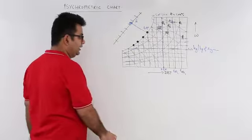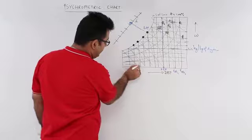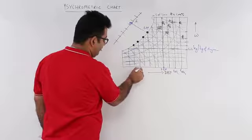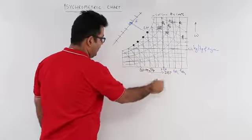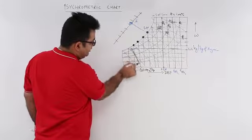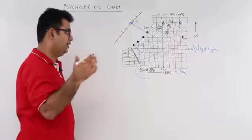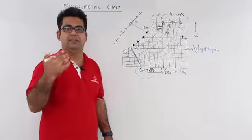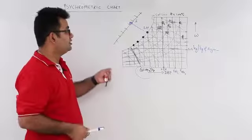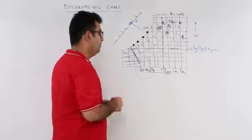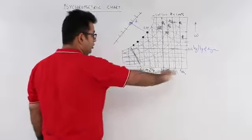The red colored lines on the chart show specific volume. For example, a line might represent 0.85 cubic meters per kg. This entire line shows the specific volume of the moist air at that particular temperature and pressure condition.